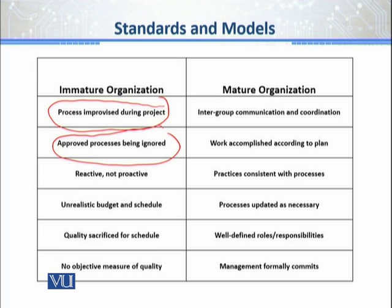Number three: reactive, not proactive. This means that immature organizations have a feeling they are delivering a good software product unless they have an issue — they don't deal with the issue proactively internally. They don't make sure problems are prevented. If you don't do the QA, this is what we call reactive.